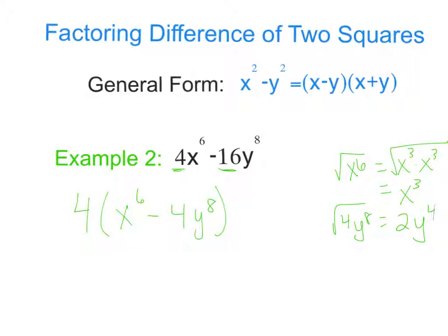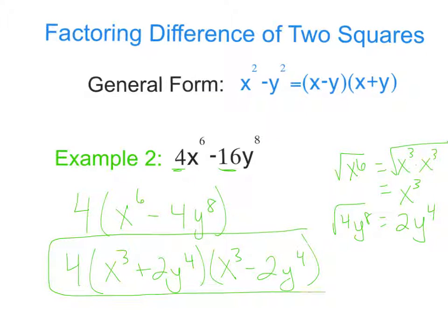So we have 4 times x cubed plus 2y to the 4th and x cubed minus 2y to the 4th. And we just keep the 4 that we took out in the beginning in the front. And that is our answer.